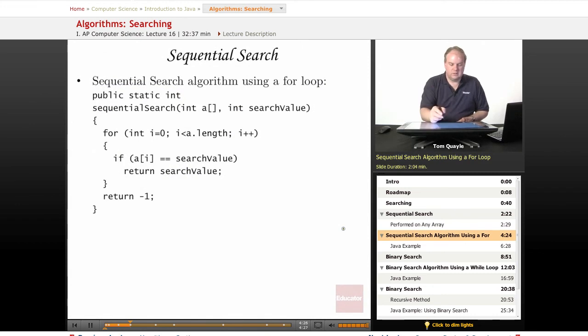Here's the sequential search algorithm as implemented with a for loop. We have sequential search, and we're going to accept two parameters. We're going to accept an array A of integers. We can search for any particular type of data, but in these examples, we'll search for integers. And we're going to accept a search value. That is the value that we're looking for in this array of integers. Clearly, this value, this type int, should match the type of the data that you're searching.